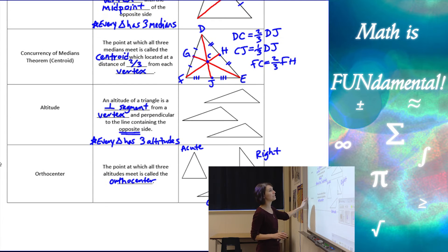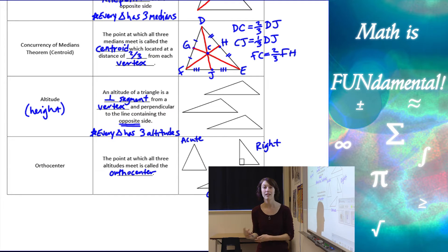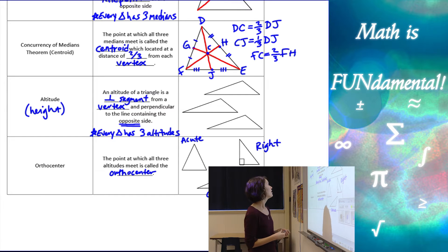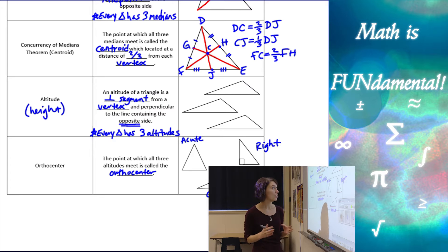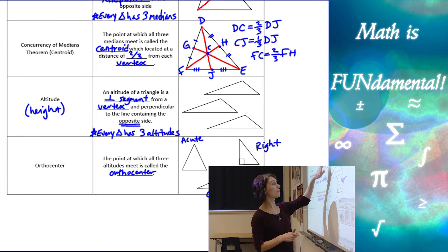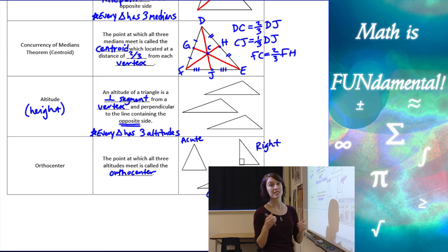Our next term is the altitude, otherwise known as the height. If you're working with area or things like that and you need the height of the triangle, that's going to be your altitude. An altitude of a triangle is a perpendicular segment from a vertex that's perpendicular to the line containing the opposite side. Now every triangle has three altitudes as well, and I've shown all three on the same triangle to show how that works.